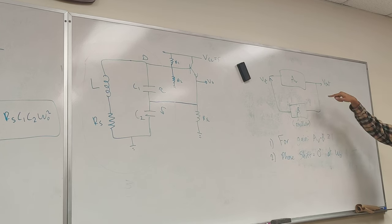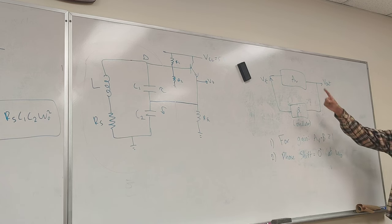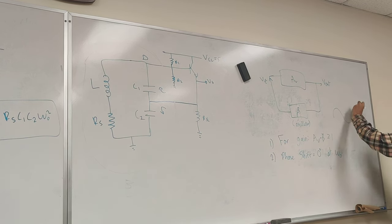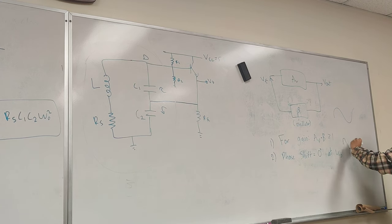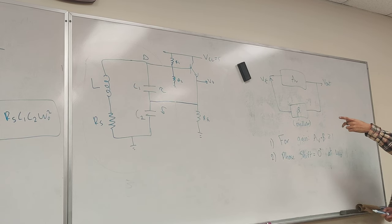So we want this loop gain to be greater than or equal to 1. If it's equal to 1, we're just going to have a stable oscillation. And if it's greater than 1, we're going to have something that looks like this, it's going to grow. Real life, we can't really have this ever. We can't have infinite energy. But what we're going to do is we're going to make it equal to 1. So that's the criteria we're going to try to meet. And that criteria will give us those equations.